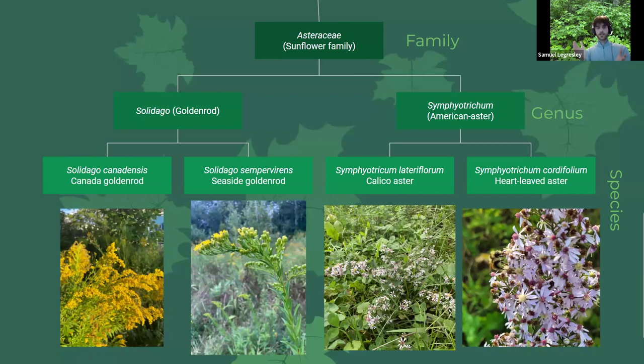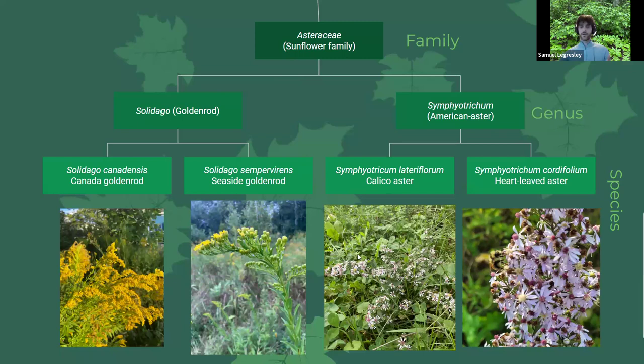If you look at the American asters, they all have these great ray flowers — the bigger outer flowers — accompanied by a bunch of inner disc flowers that make up this compound flower. The compound flower structure is also in goldenrods, but you can't really see it because it's so small; if you go in with a hand lens, you can see it. Every member of the sunflower family has this compound structure that makes it really recognizable. We can see how the family, the genus, and the species fit into this puzzle.